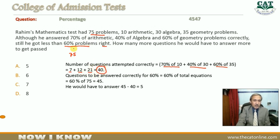Whereas he needed 60% problems correct. To pass, how many questions should be correct? 60% of 75, which means 45 should be correct.